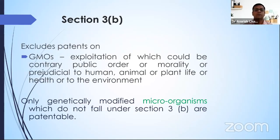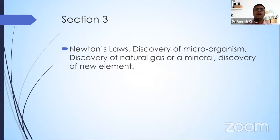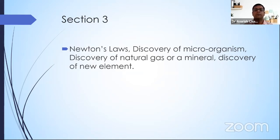GMOs, especially microorganisms, can be patented, but you cannot patent any GMO related to plants or animals. The mere discovery of a scientific principle is not patentable — if you discover a new microorganism existing in nature, or develop a new law like Newton's laws, these cannot be patented. Similarly, discovering a new planet or element cannot be patented because it already existed in nature and was not your intellectual creation.